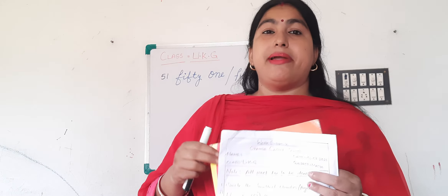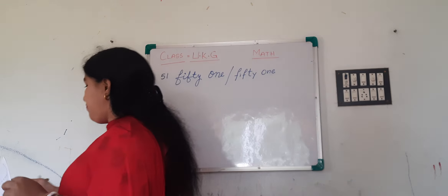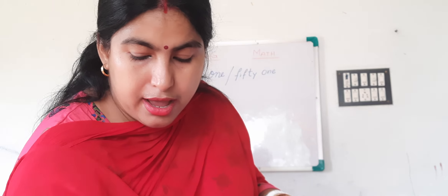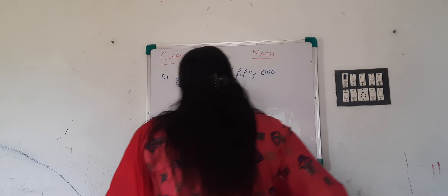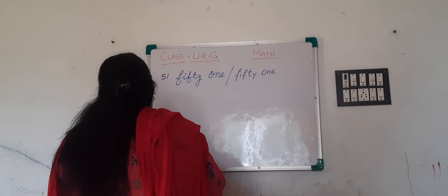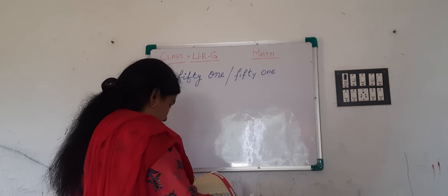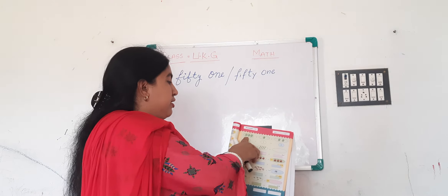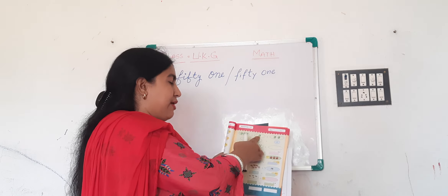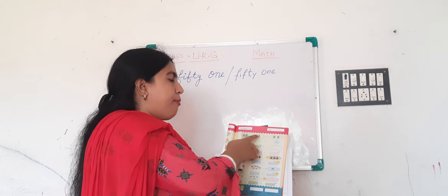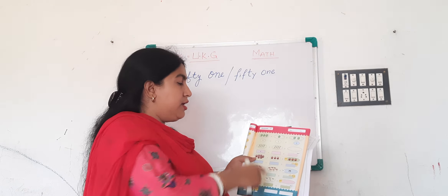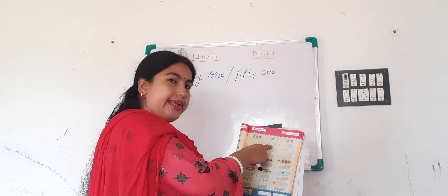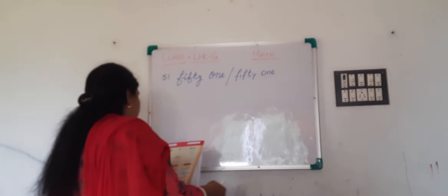Question number 3: you have to count pictures and subtract. The first one is done for you. There are 3 mangoes, and if I take 1 mango out of these 3 mangoes, how many are left? Only 2. So you have to count the mangoes, write the number, then write how many mangoes have been taken, and write the answer.